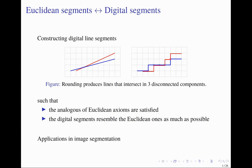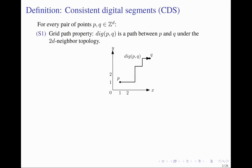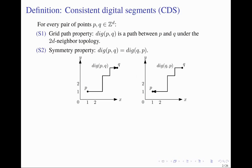Digital line segments have applications in image segmentation. We call a set of digital segments consistent if they satisfy the following five axioms for every pair of grid points P and Q. The digital segment PQ is a path from P to Q through grid points such that the distance between two consecutive grid points on that path has exactly distance one. The digital segment from P to Q is the same as the digital segment from Q to P.